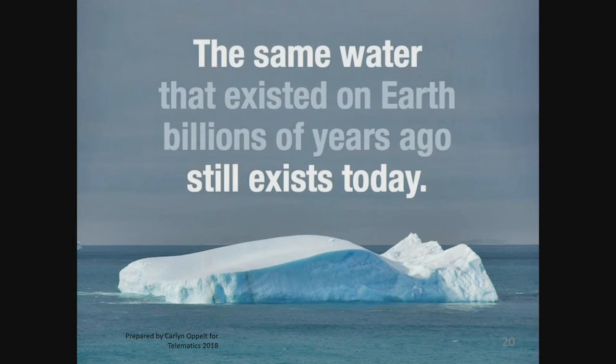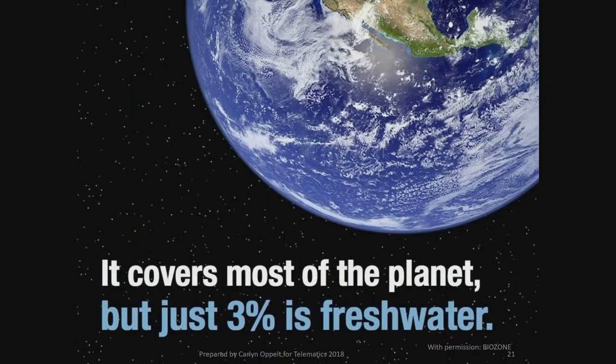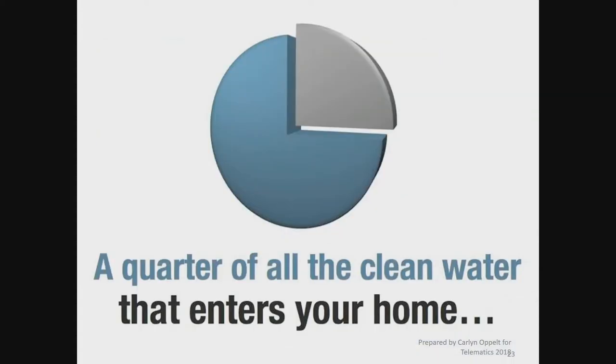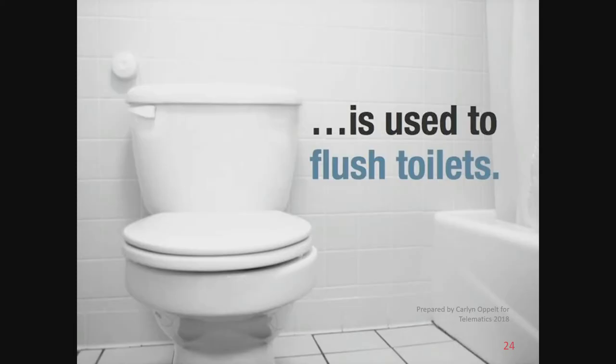Some sobering thoughts: the same water that existed on Earth billions of years ago still exists today. It covers most of the planet, but only 3% of that water is fresh water, of which less than 1% of all fresh water is readily accessible for human consumption. A quarter of all clean water that enters our home goes to the toilet. This is one reason we must rethink our toilet usage — the Stellenbosch University has amazing ways of reducing water usage.